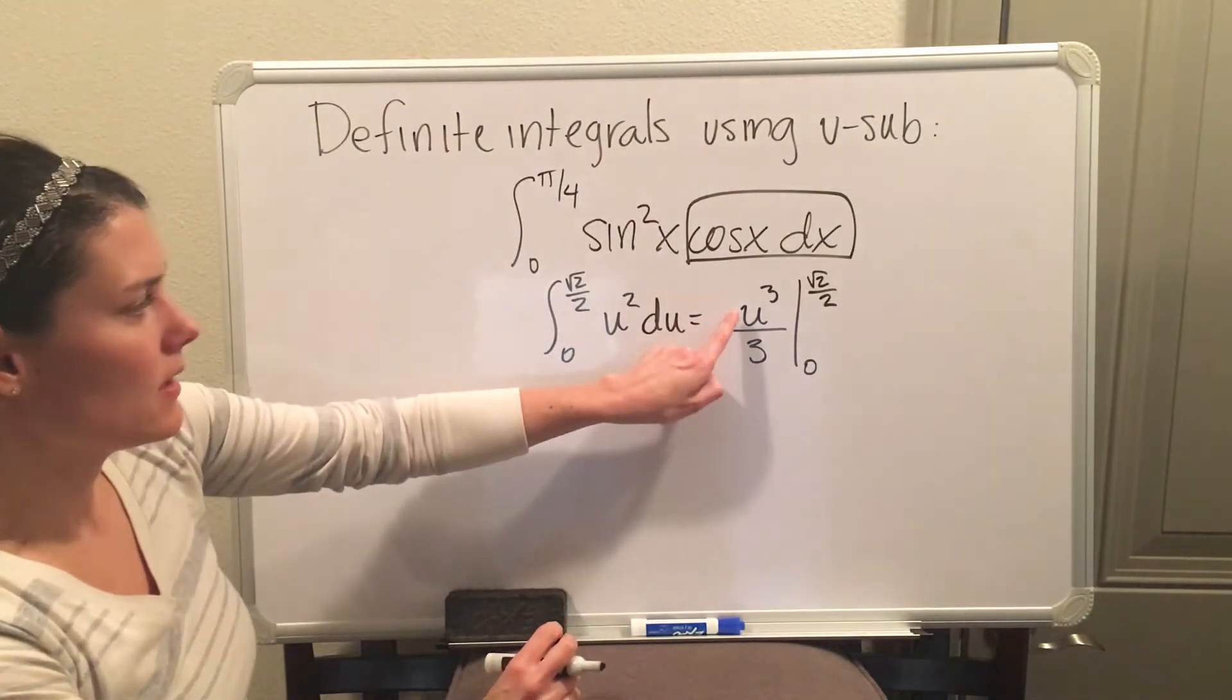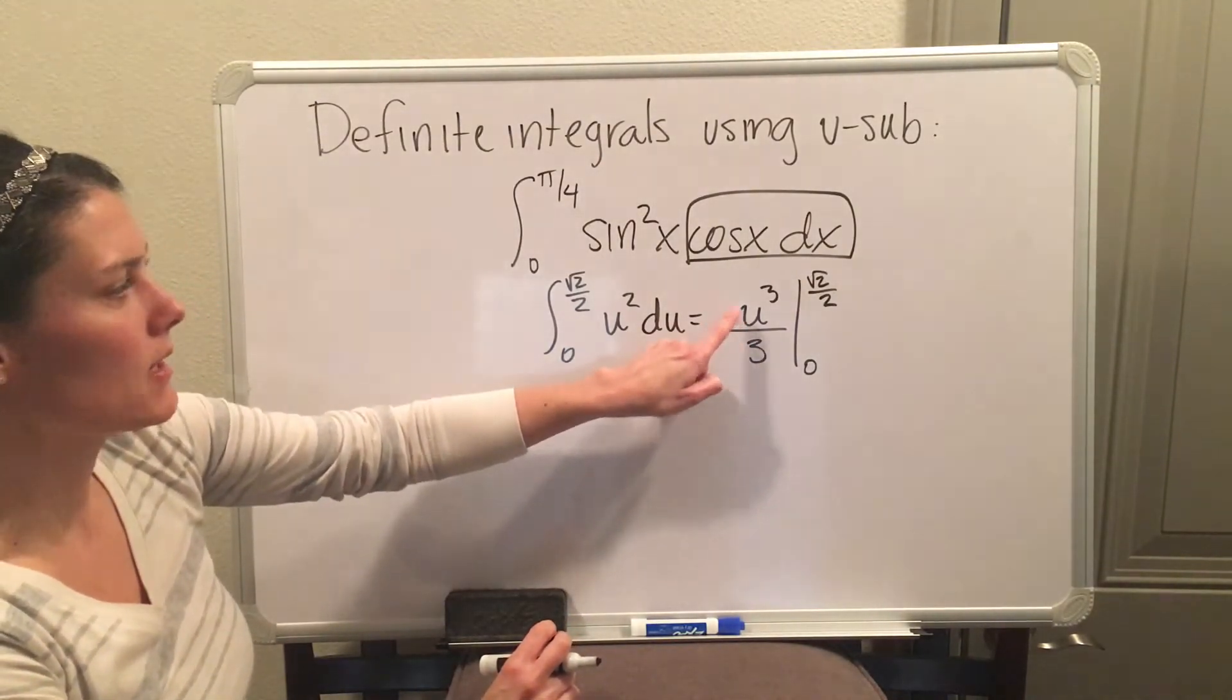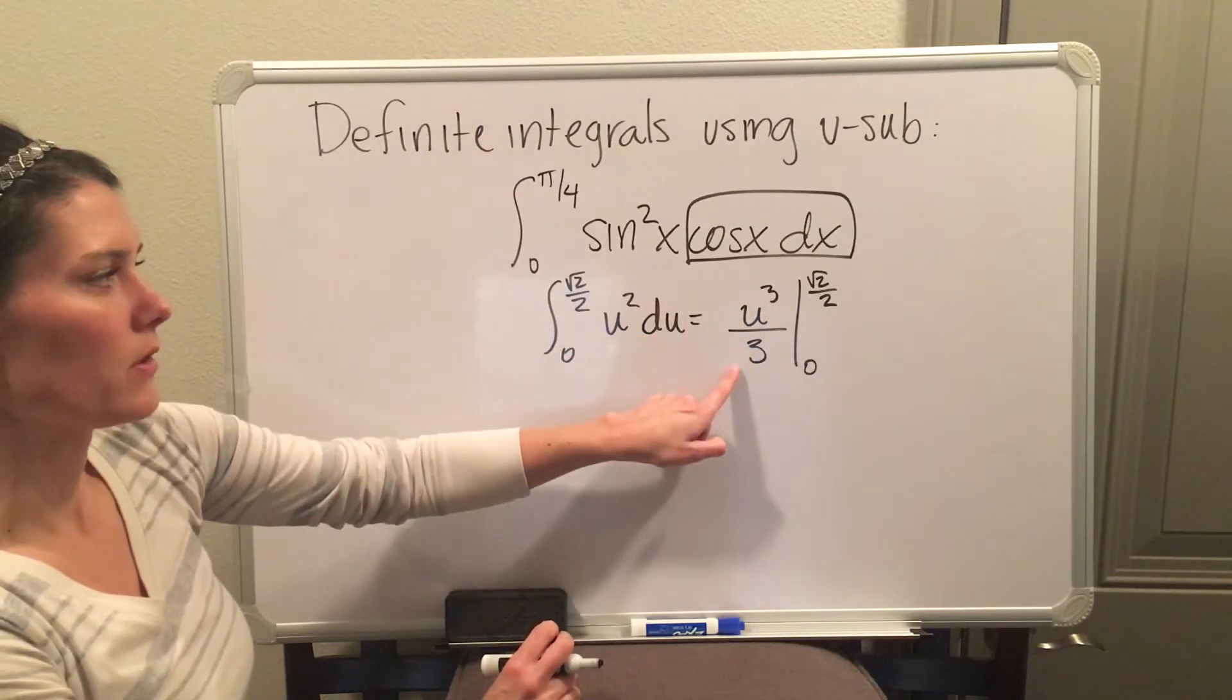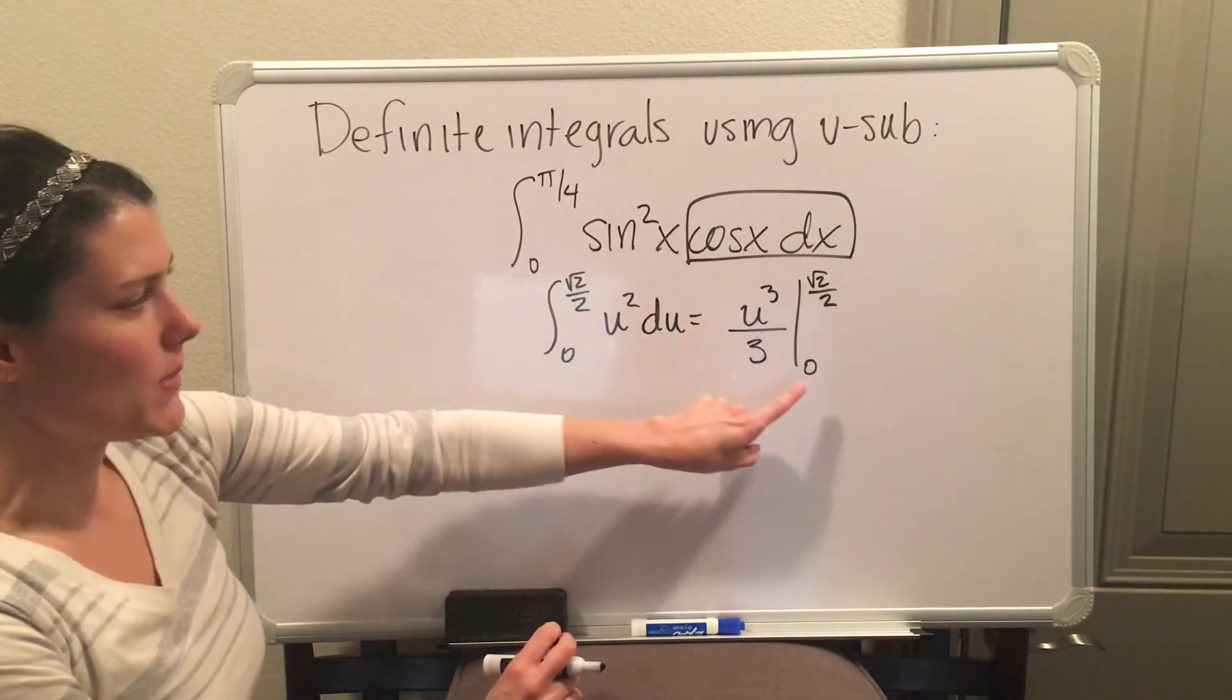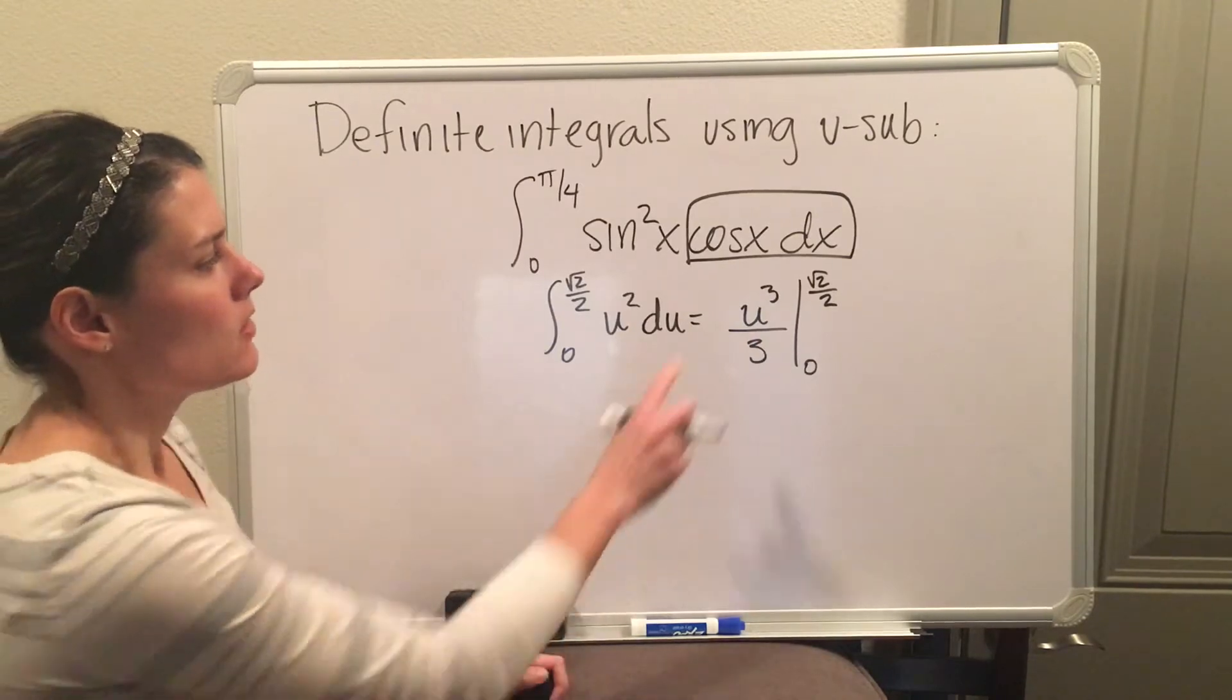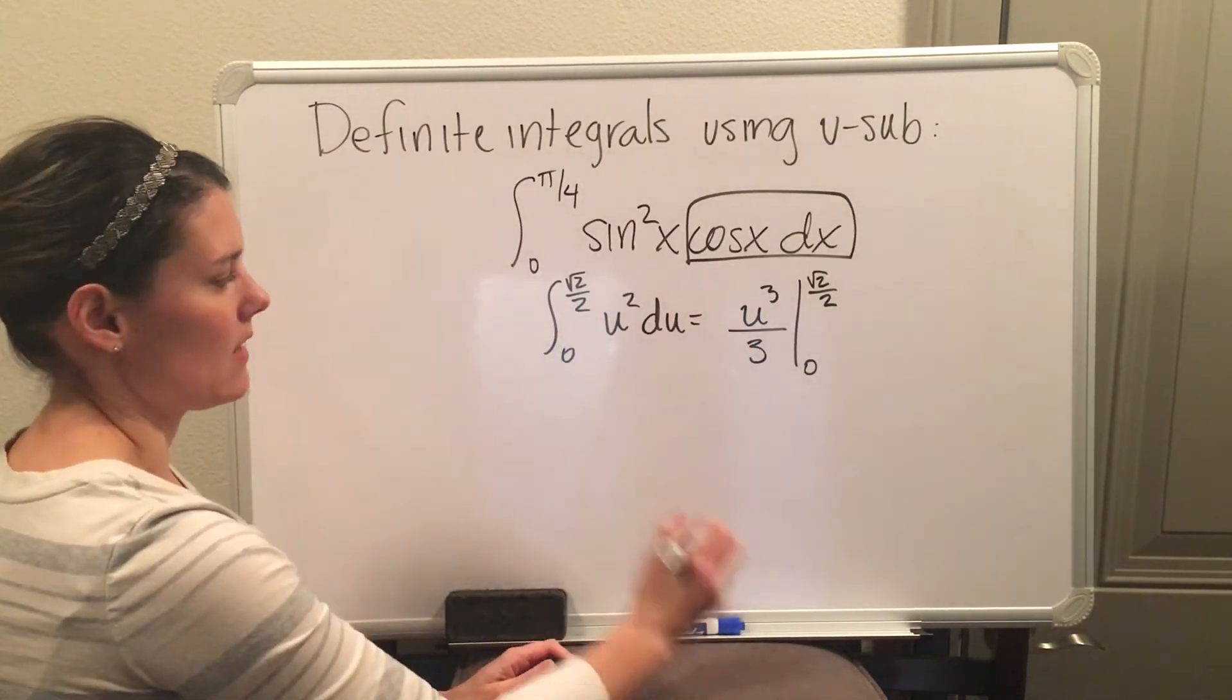Again, remember, do not plug u back in. So this is not sine cubed of x over 3, it's just u cubed because I already changed the a and b. You keep it as a u and now you apply the FTC.